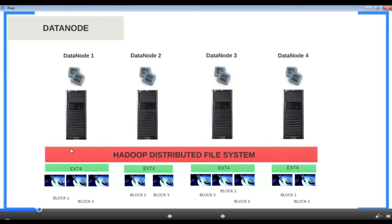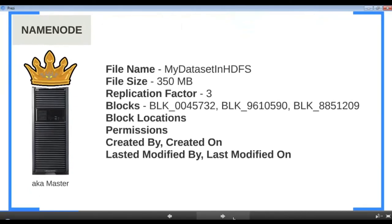If data nodes don't know which block belongs to which file, who has that key information? This is maintained by a node called the name node. The name node keeps track of all files and datasets in HDFS — for any given file, the name node knows the list of blocks that make up the file and the location of each block. Now you can understand the importance of the name node: if the name node goes down, there's no way to look up files because you can't determine which blocks make up a file or where those blocks are located. The name node is also called the master node; data nodes are called slave nodes.